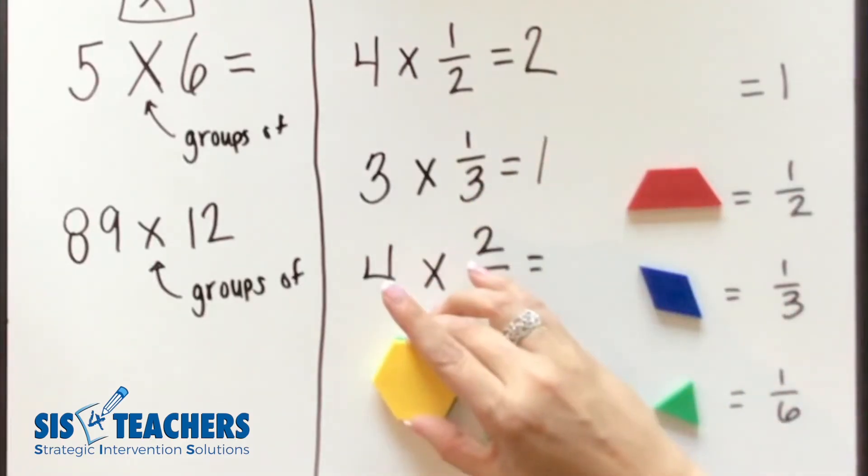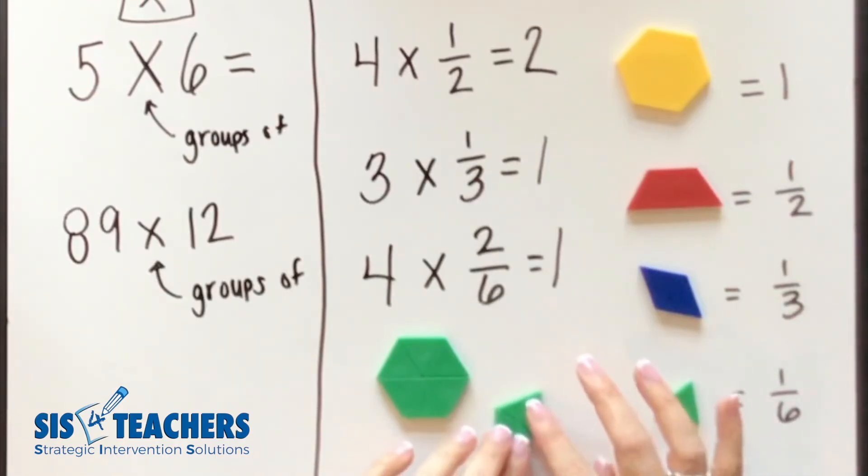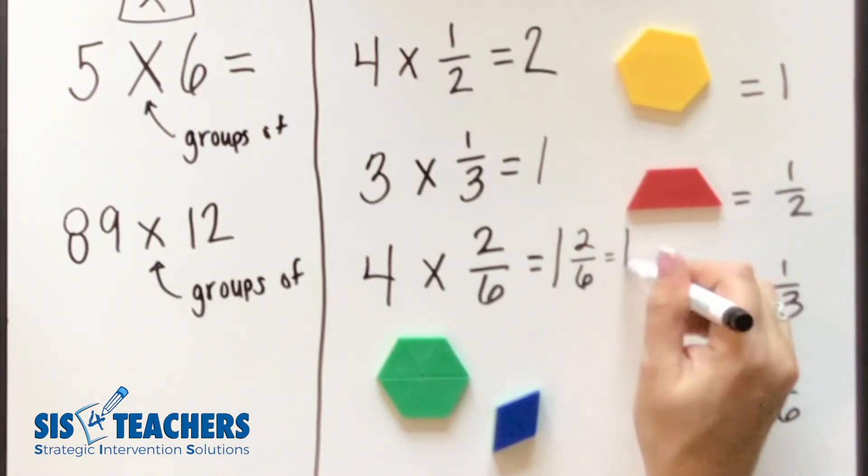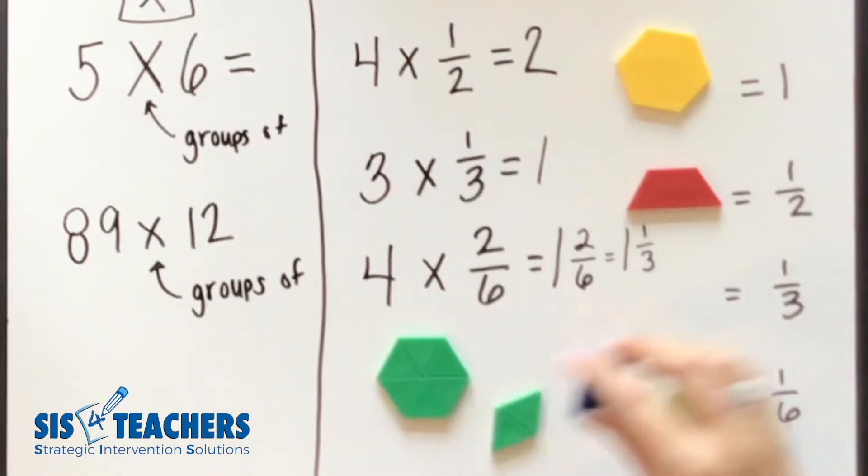When I put this together, I know that it's equal to one. So I know that all of those totaled at least one, but I have a little bit more left. So one way I could put this is I could put the answer as 1 and 2/6. But if we wanted to reduce that into its simplest form, we have a piece that will fit right on top, which also tells us this also could equal 1 and 1/3. So when we have four groups of 2/6, we know that we can have 1 and 2/6 or 1 and 1/3 to reduce it.